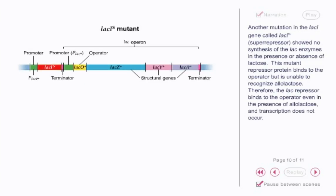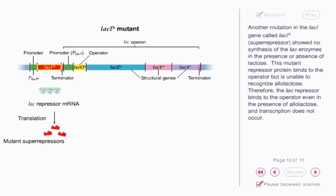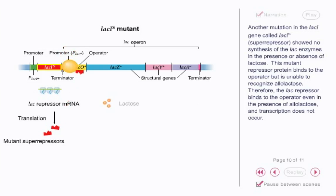Another mutation in the lacI gene, called lacIs or super repressor, showed no synthesis of the lac enzymes in the presence or absence of lactose. This mutant repressor protein binds to the operator but is unable to recognize allolactose. Therefore, the lac repressor binds to the operator even in the presence of allolactose and transcription does not occur.